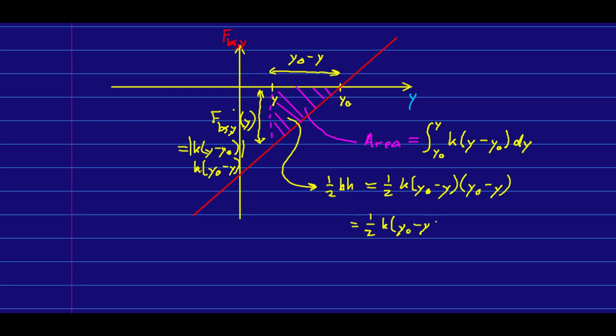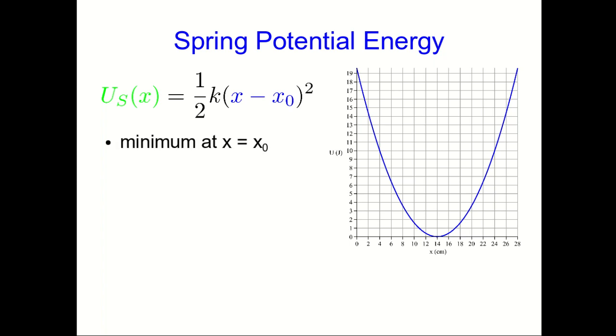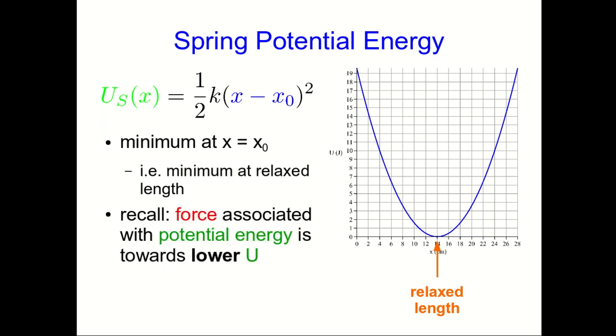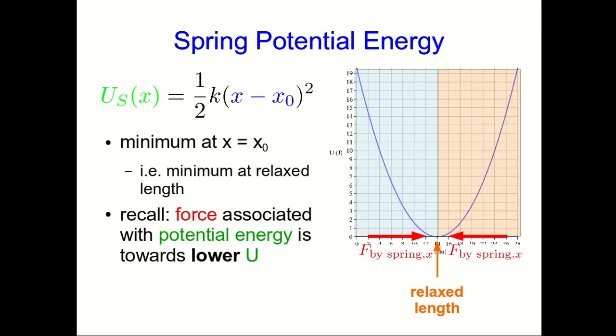k(y₀ - y) squared. And the fact that that's all squared actually shows that it didn't matter whether I flipped these around—it was all going to come out as positive anyway. So here's our expression for spring potential energy. Note that it's a minimum at x = x₀, or in other words, the spring potential energy is a minimum when the spring is at its relaxed length, which we already knew. Also recall that the force associated with any potential energy is always towards lower potential energy. So in this whole region, the force by the spring must be to the right, and in this whole region, the force by the spring must be to the left. But that's just telling us what we already knew, which is that the force by the spring is always back towards its relaxed length.